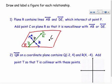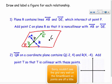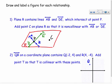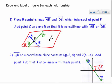Number two: line QR on a coordinate plane contains Q at negative two, four and R at four, negative four. I'll plot those coordinates and draw the line through them. Then it says add point T that is collinear with these points — so anywhere on that line works. I'll place T somewhere on the line, around point one, zero. You can also use a coordinate plane for this.